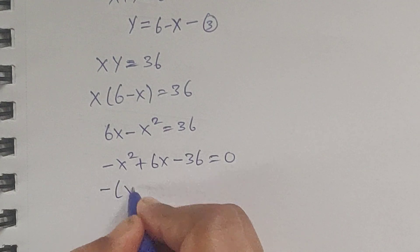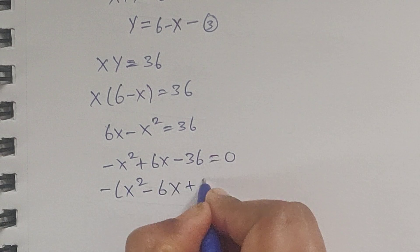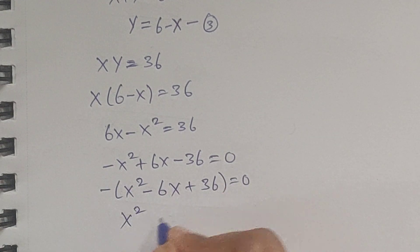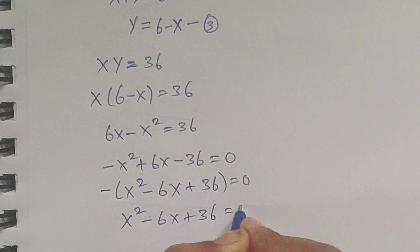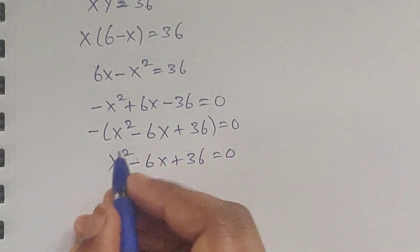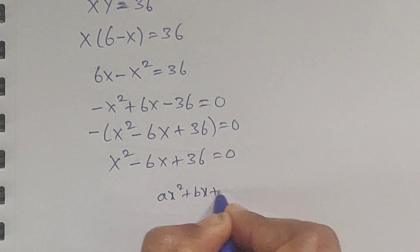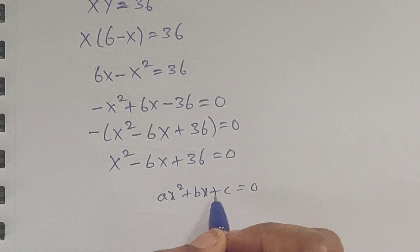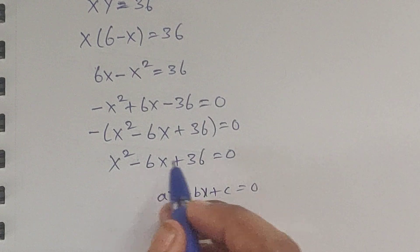So minus x squared plus 6x minus 36 equals 0. Taking out the negative sign gives x squared minus 6x plus 36 equals 0. This is in the form ax squared plus bx plus c, so comparing the two equations: